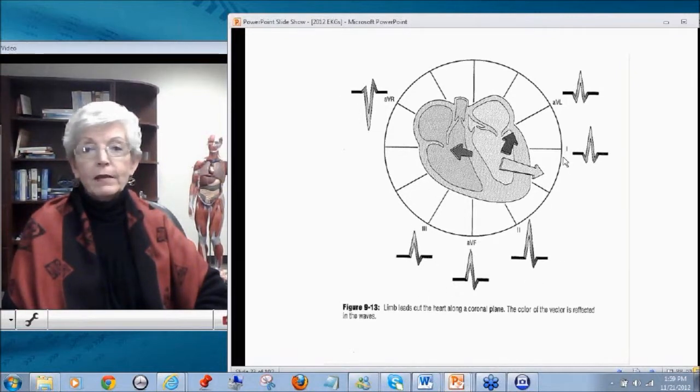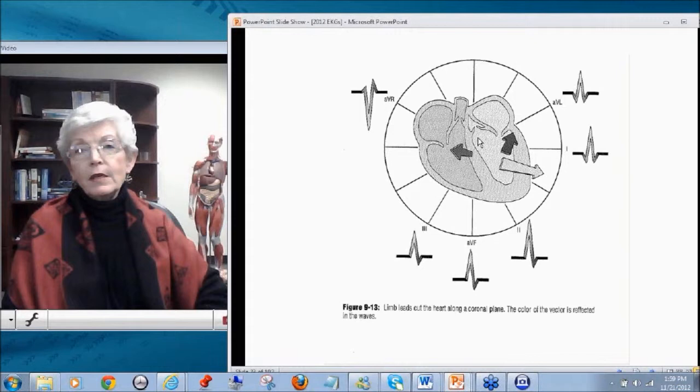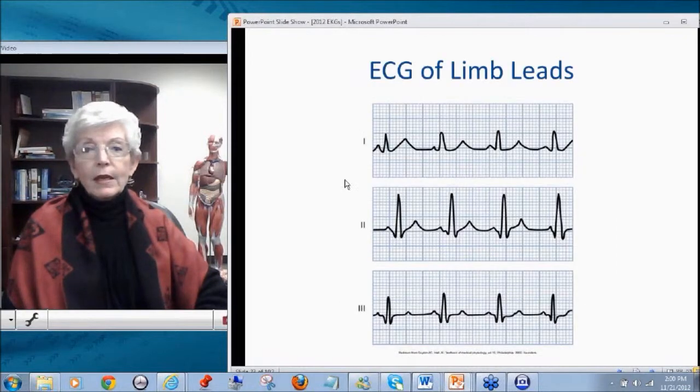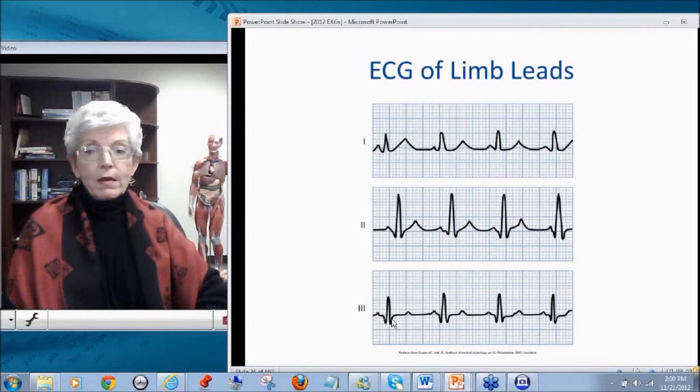We'll talk about these every three in a minute. Lead 1 is positive. Remember the flow of electricity is predominantly in this direction. So lead 1 is going there, not as directly as a lead 2, but it's still positive. So 1, 2, and 3 are positive. And if you were to look at them, 1, 2, and 3 are positive, but look at 2.